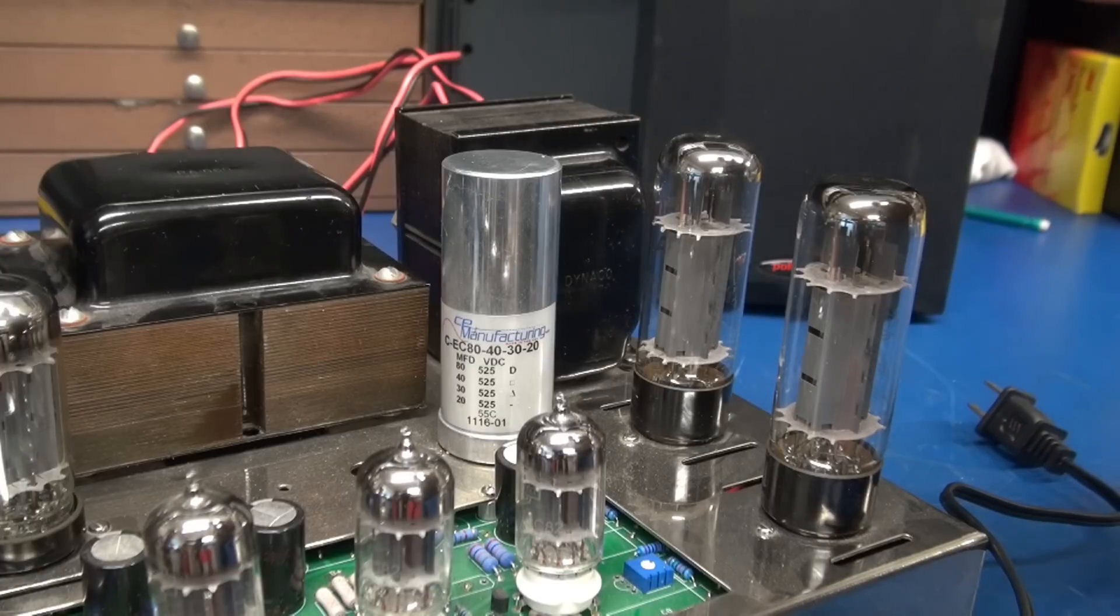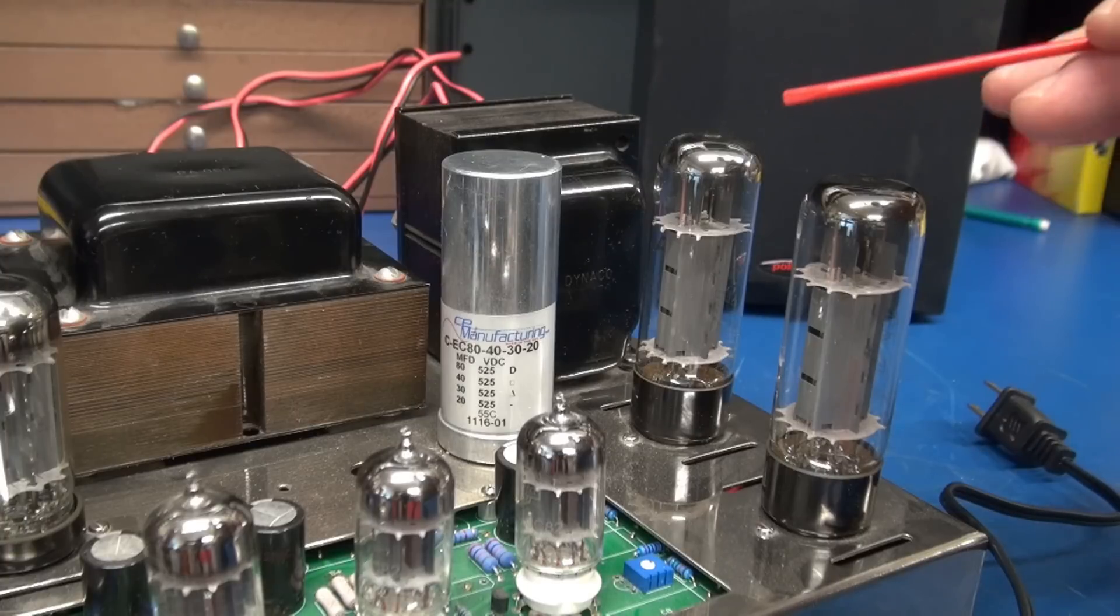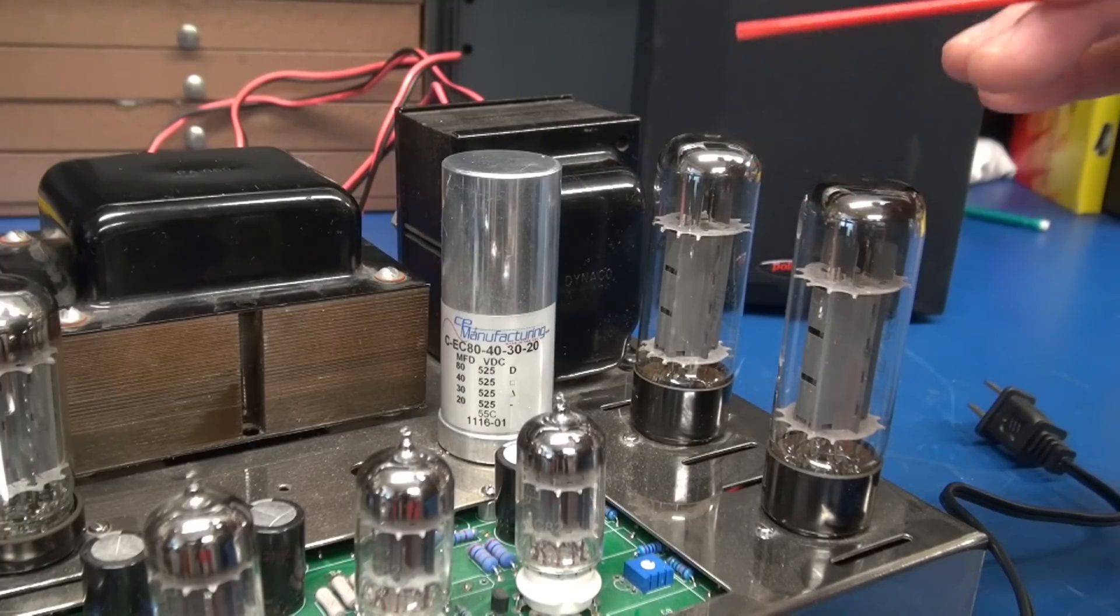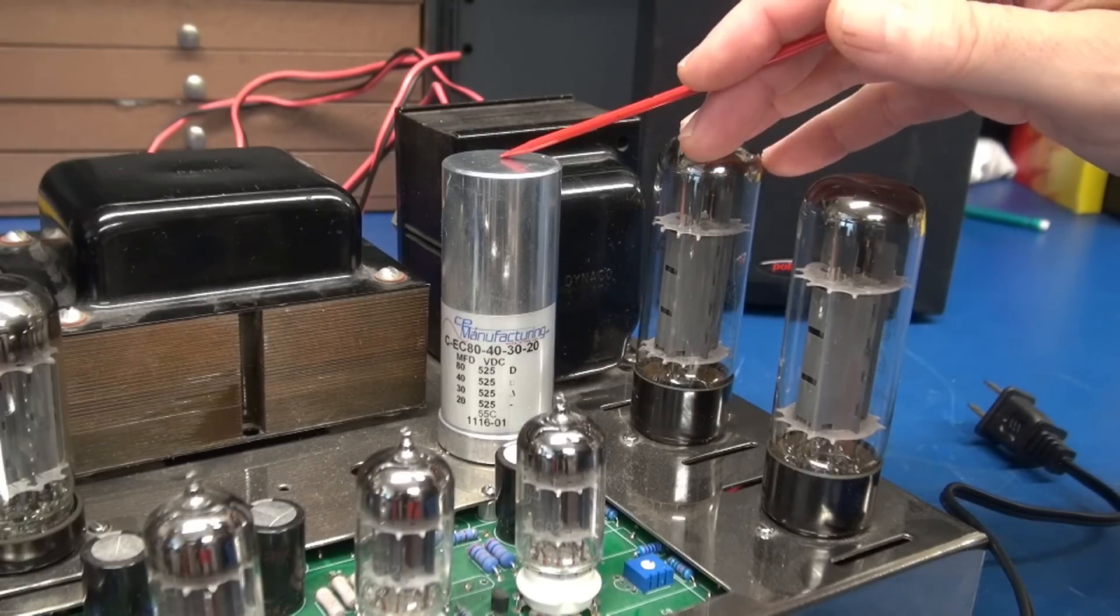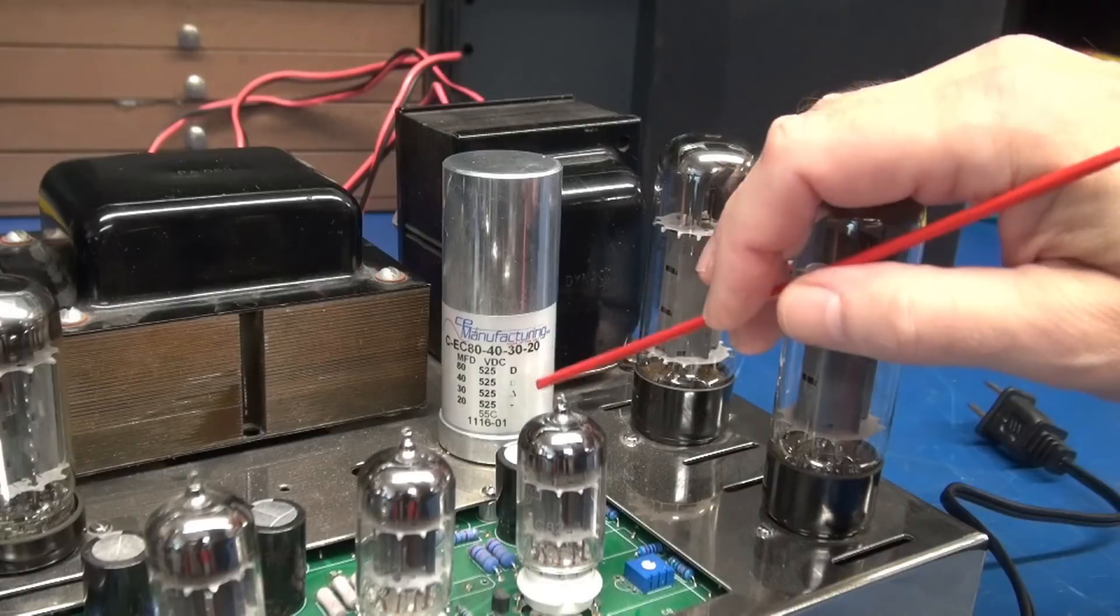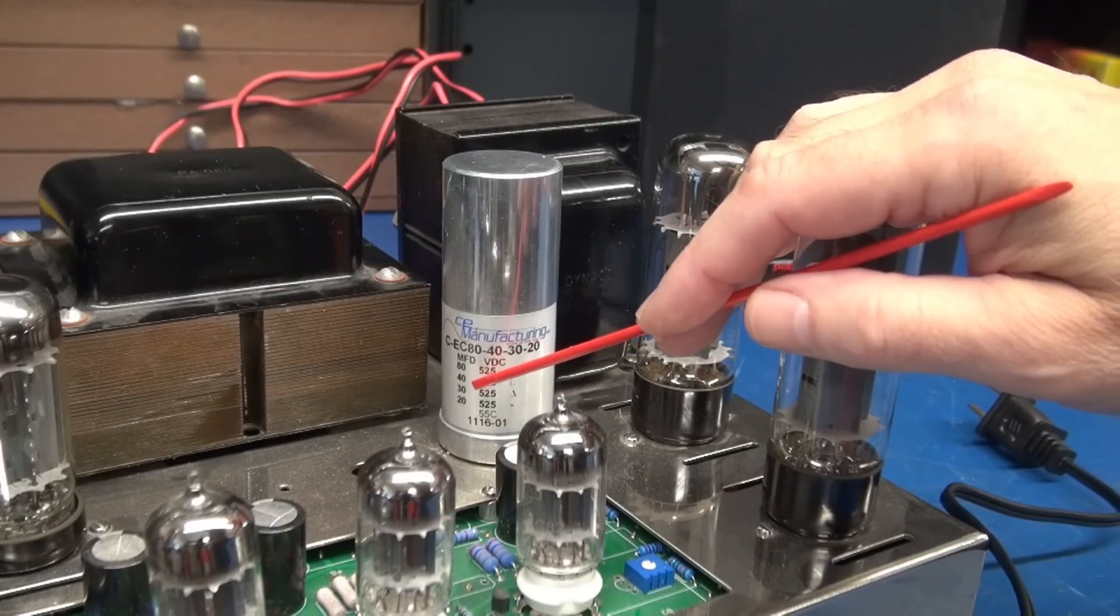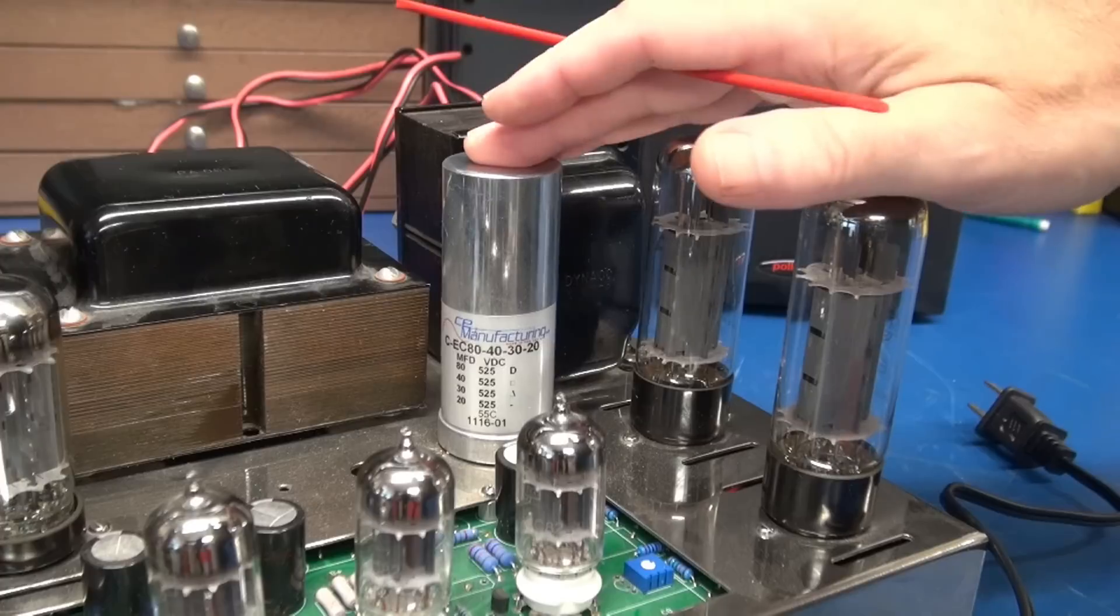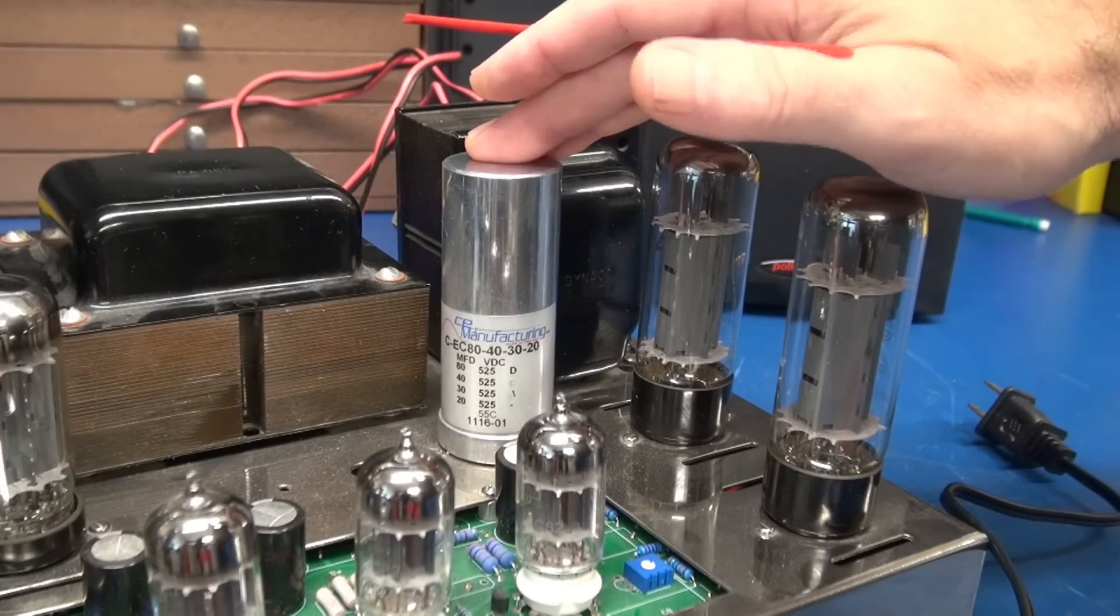I've used many CE manufacturing caps over the years for repairs and never had a failure or a report of a failure. This may just be a case of a manufacturing fault. The cap needs to be changed. Here is the one that is installed. It's rated at 525 volts with 80, 40, and 220 microfarad sections. These are normally the ones you see as recommended replacements for the Dynaco series.